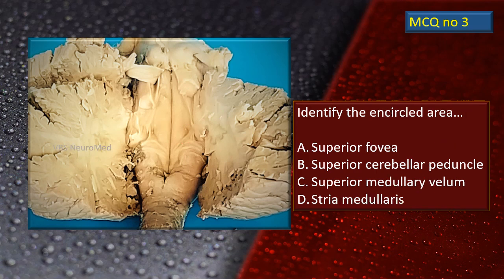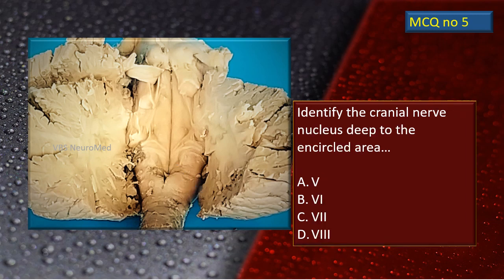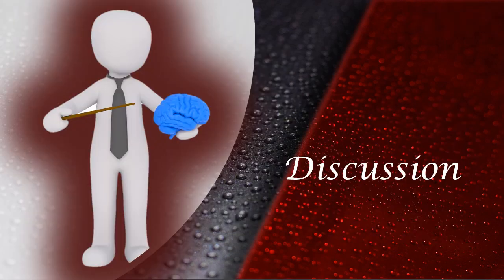Next, we have encircled a particular area in the floor of the fourth ventricle — what is that? The next two MCQs are related to cranial nerve nuclei. A flashing arrow points to a triangular area; deep to it is a nucleus — which cranial nerve nucleus is this? And lastly, another area marked with a dotted red-white circle: right underneath this prominent landmark in the floor of the fourth ventricle, there is a nucleus of a cranial nerve — which cranial nerve is this? Now let's go to the video.